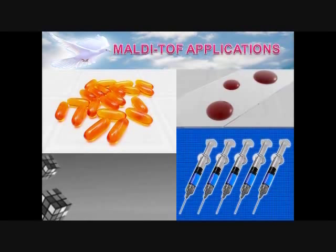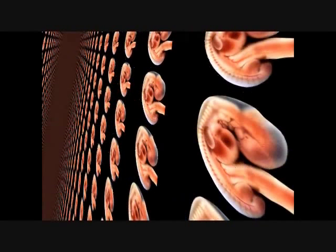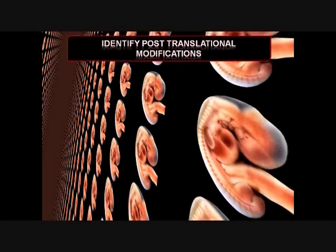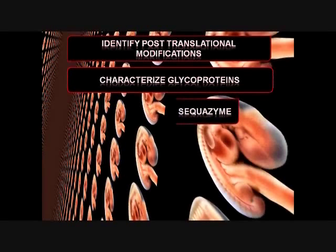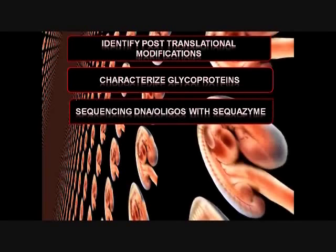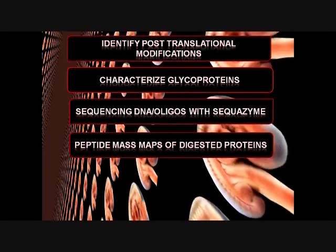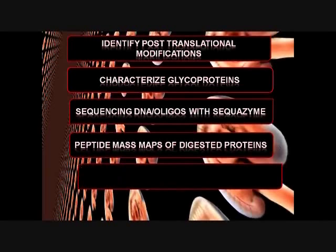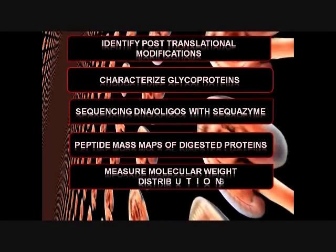In proteomics, a multitude of mass spectrometers is used for the identification of proteins isolated through gel electrophoresis and chromatographic techniques. It is also used to characterize intact proteins. Recently, the technique was also successfully applied to DNA sequencing, screening for mutations and identifying different strains of viruses to help develop vaccines. Other applications include sequencing DNA or oligonucleotides, generating peptide mass maps of digested proteins, and measuring molecular weight distribution of polymers.